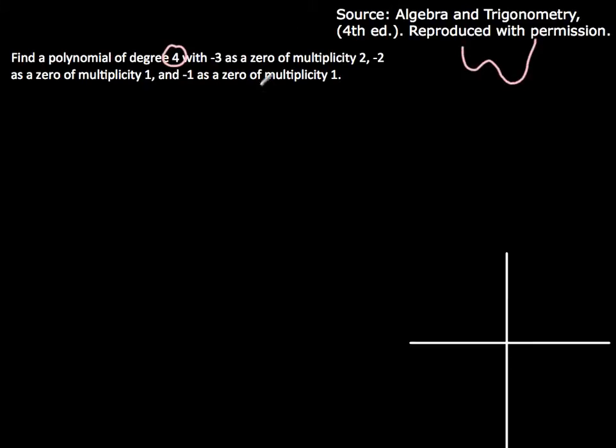So it's degree 4, so that means it has to have this kind of shape to it. It doesn't say anywhere in the question if it's the right side up one like this, where it would be a positive x to the 4th, or if it's an upside down one, which would be a negative x to the 4th.